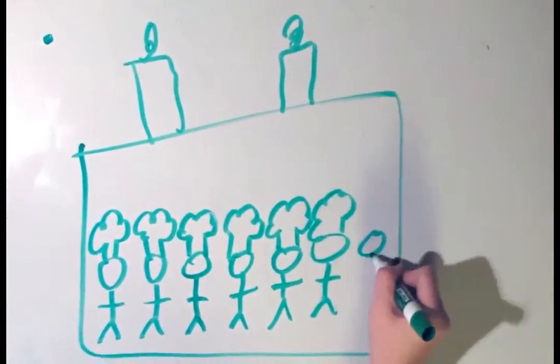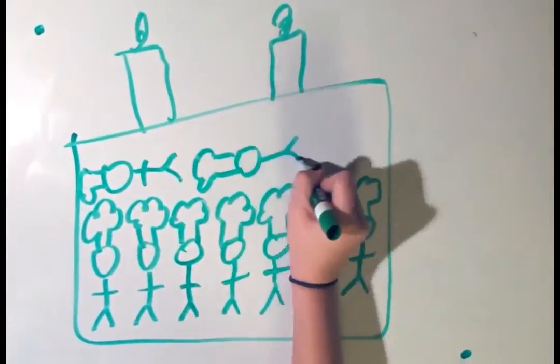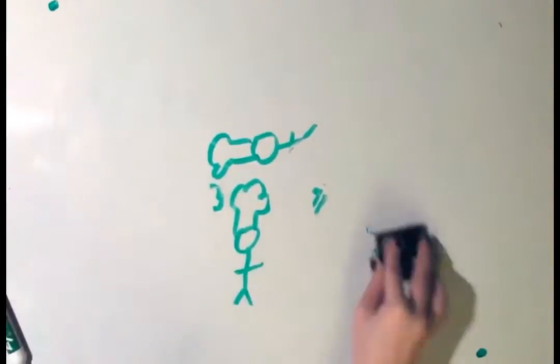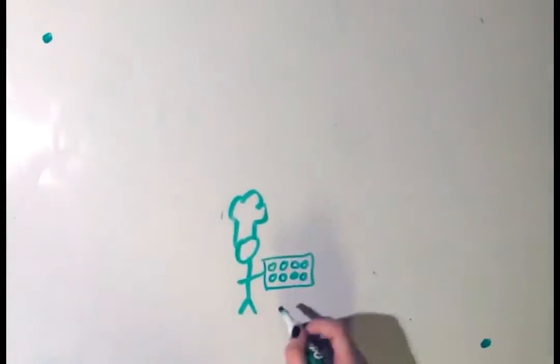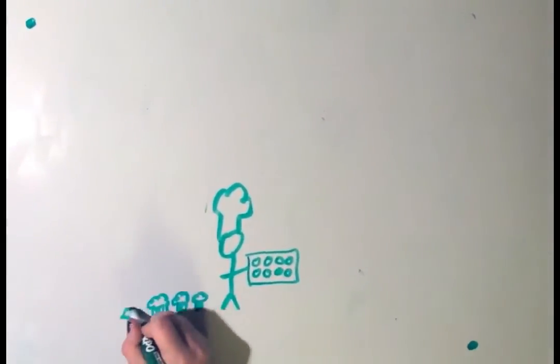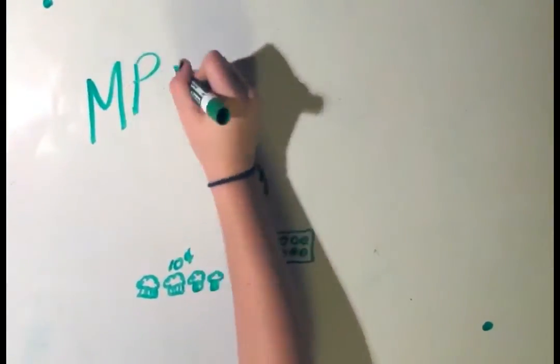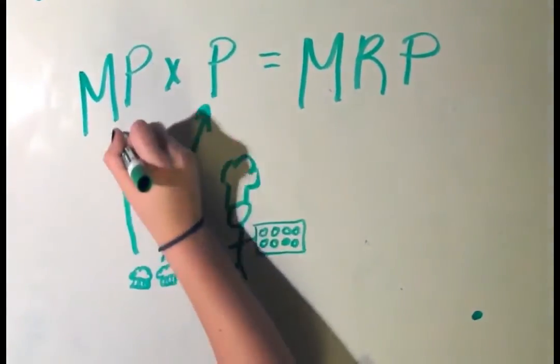But over time, each additional worker increases productivity less and less. The productivity for the last worker hired is Arturo's marginal productivity. If we multiply this by the price at which the Muffins are sold at, we get Arturo's marginal revenue product. So, marginal revenue product is marginal product multiplied by the price at which he sells his product.